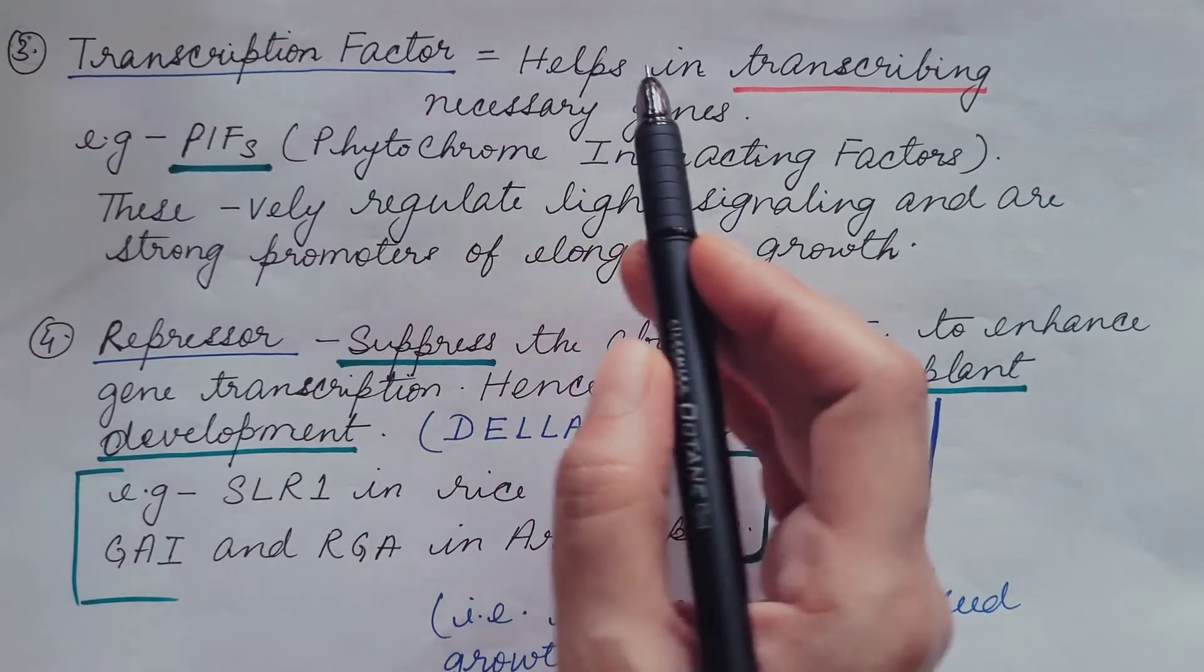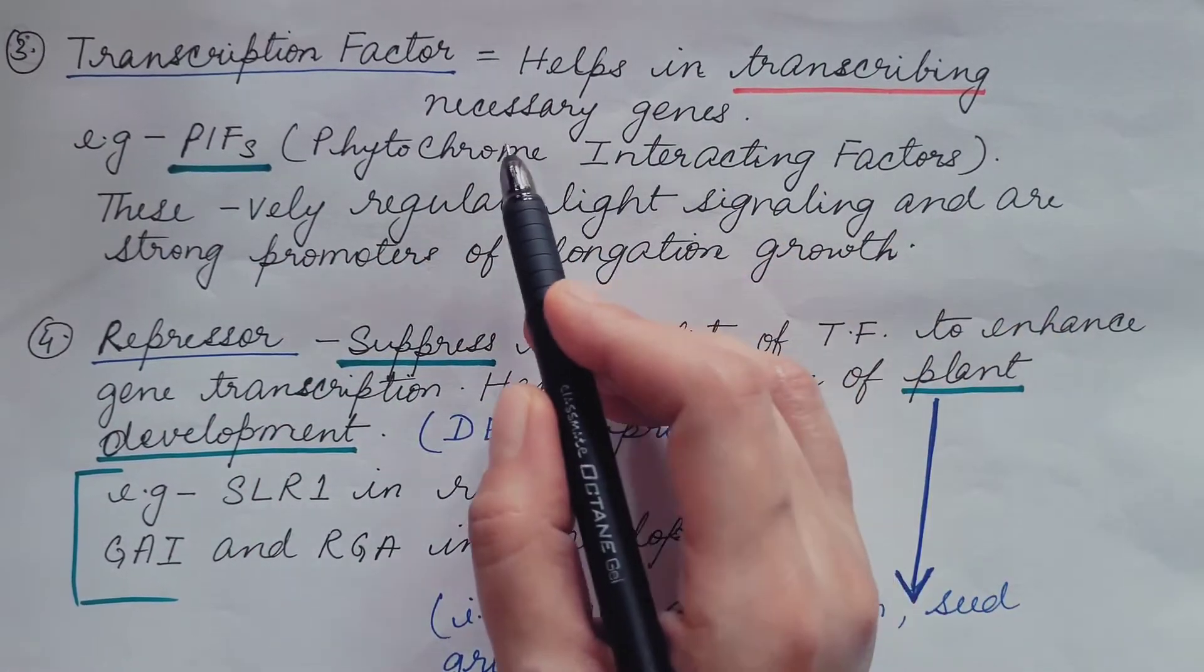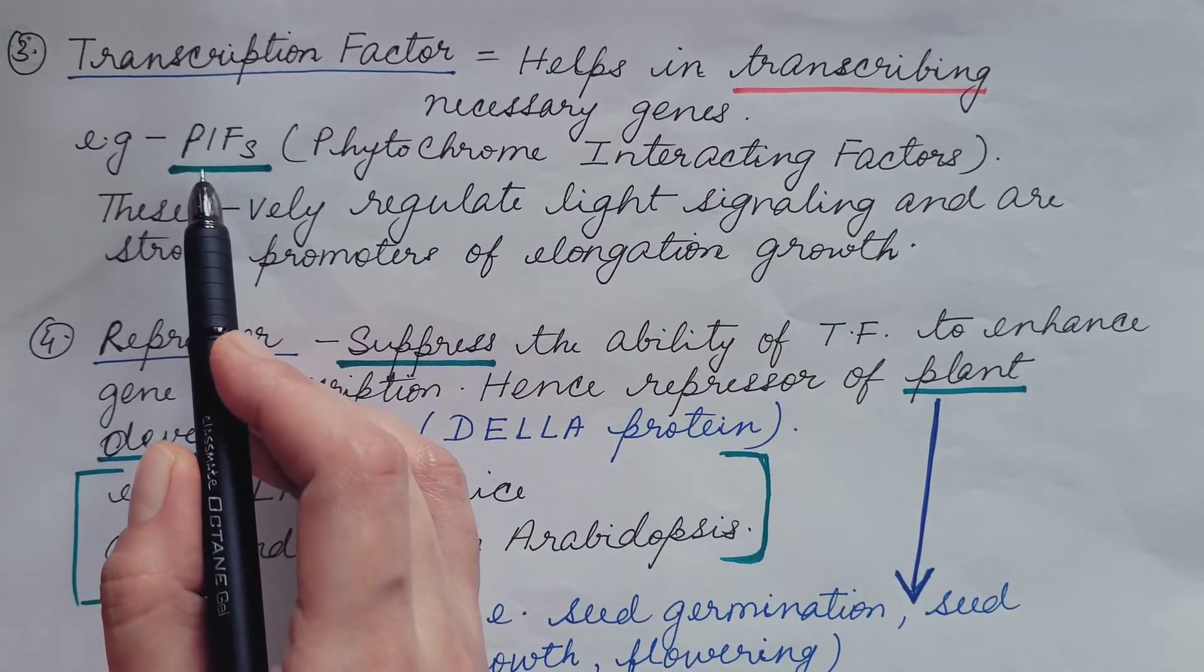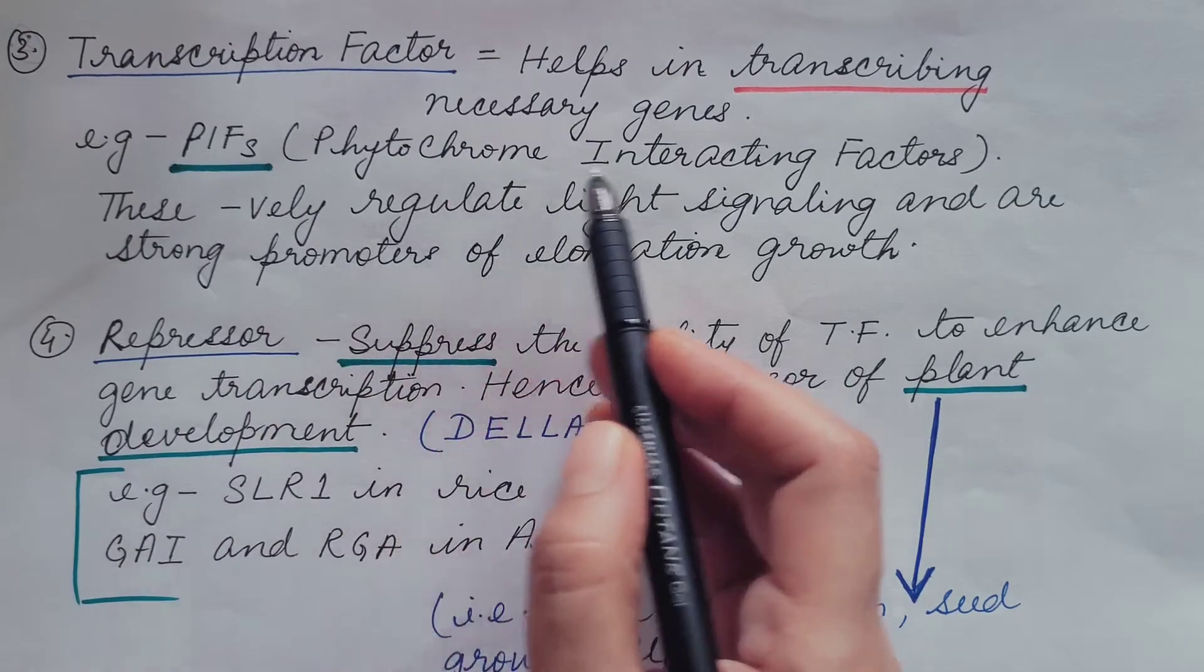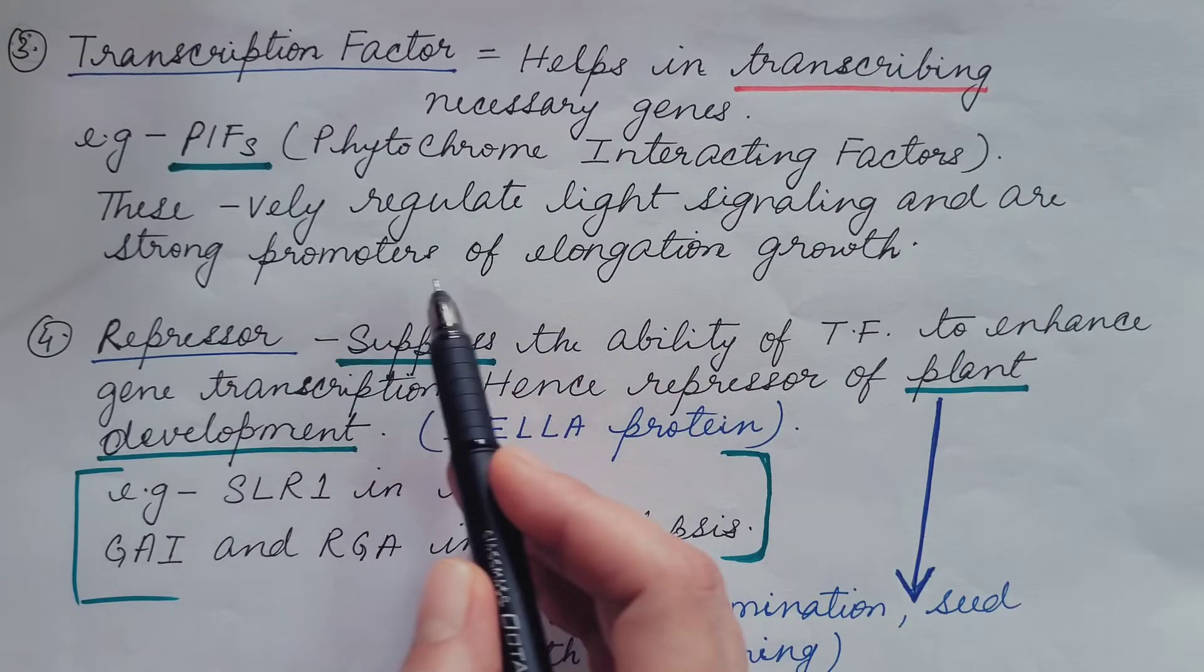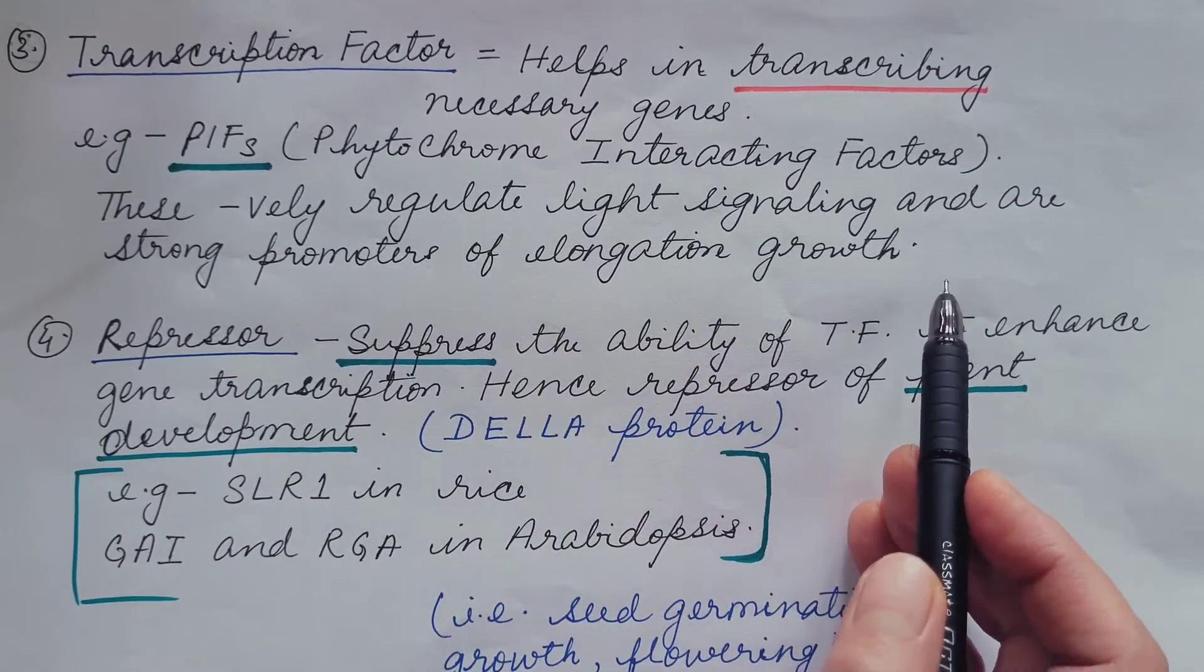Now third is transcription factor. It helps in transcribing necessary genes. One example of transcription factor is PIF, phytochrome interacting factors. These negatively regulate light signaling and are strong promoters of elongation growth.